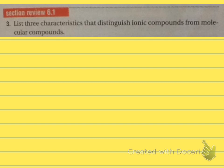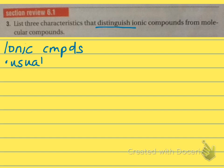Question number 3 says: list three characteristics that distinguish ionic compounds from molecular compounds. Distinguish means how you can tell them apart. Ionic compounds are usually a solid at room temperature.